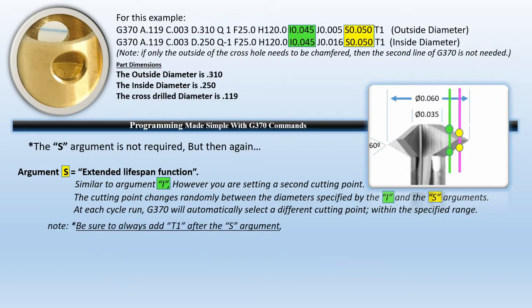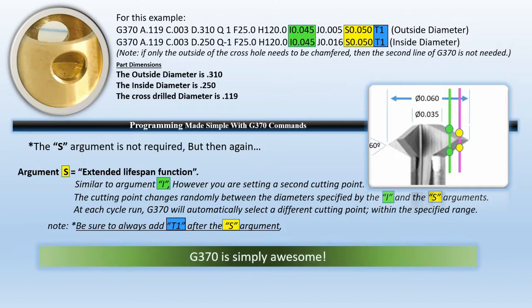Be sure to always add T1 after the S argument. The T1 after the S argument specifies to use the extended tool life. If you have these two arguments in here but you do not add the T1, it won't activate. So it's twofold: you have to give it the I and the S arguments to give it the range, but the T1 actually says yes, I do want to use the extended tool life function.